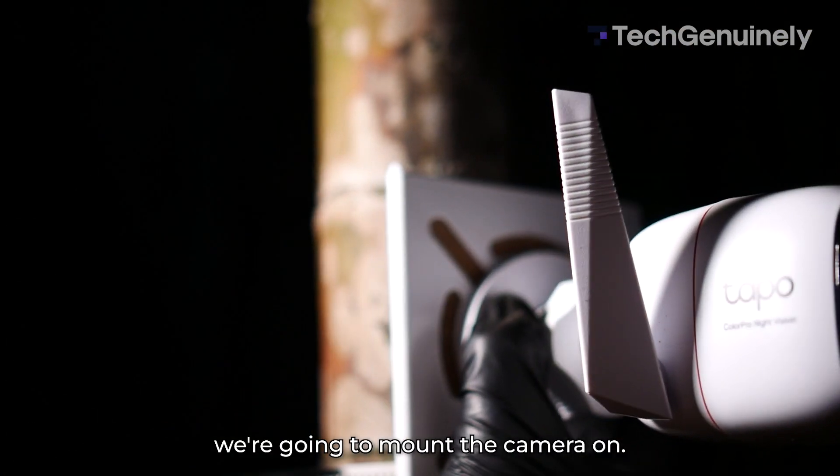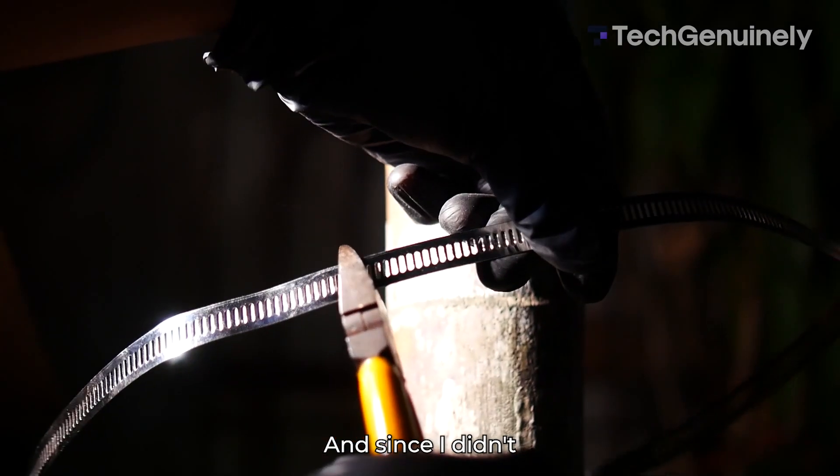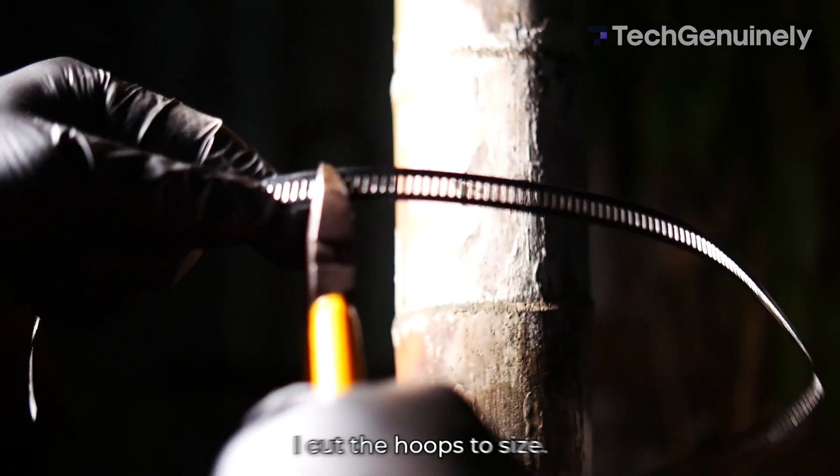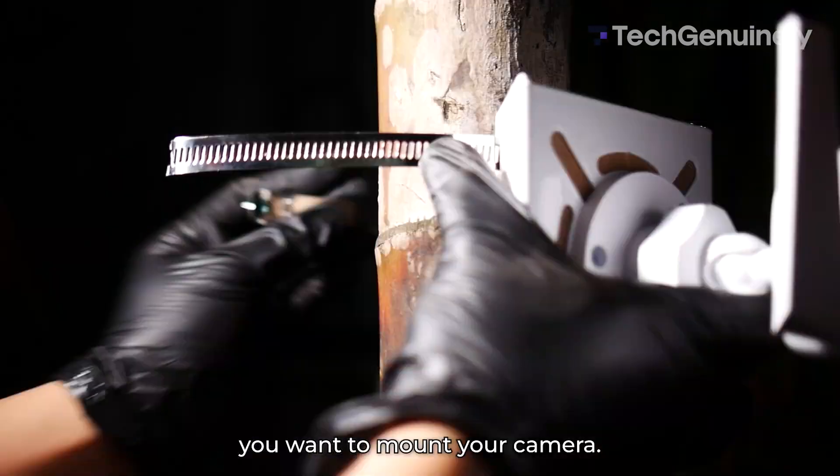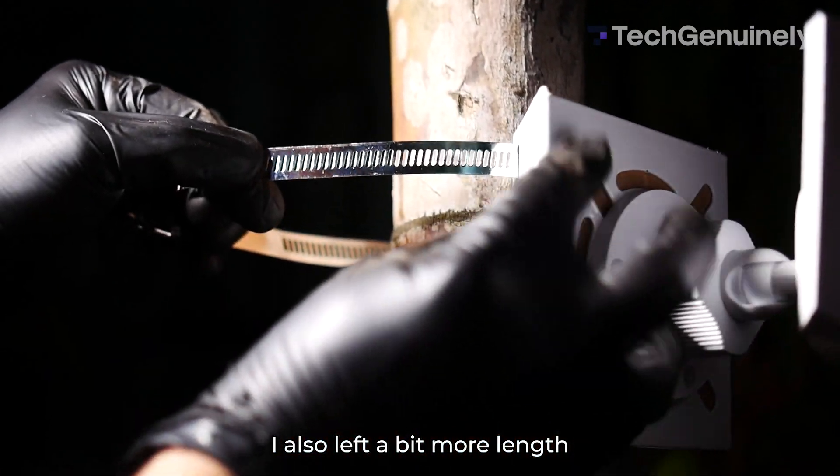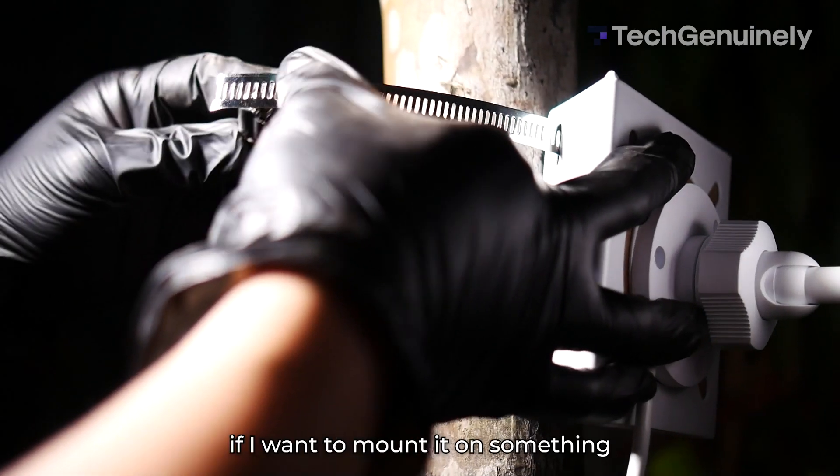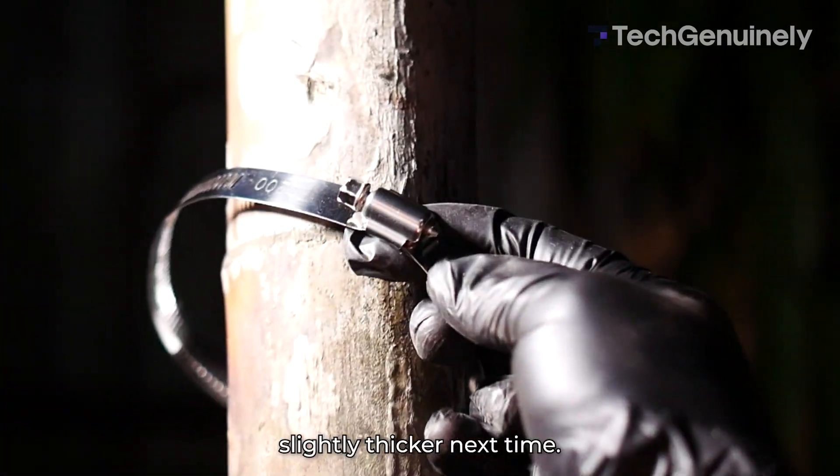And here's the tree we're going to mount the camera on. And since I didn't want to spend the whole night there, I cut the hoop to size. You might want to do the same depending on what pole you want to mount your camera. I also left a bit more length so that I have options if I want to mount it on something slightly thicker next time.